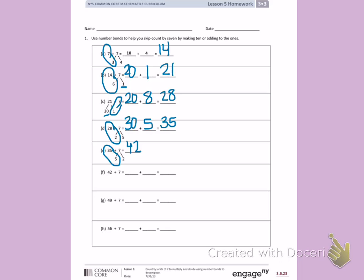Letter F. I'm going to decompose 42 into 40 and 2. 7 and 2 is 9, giving me a total of 49.